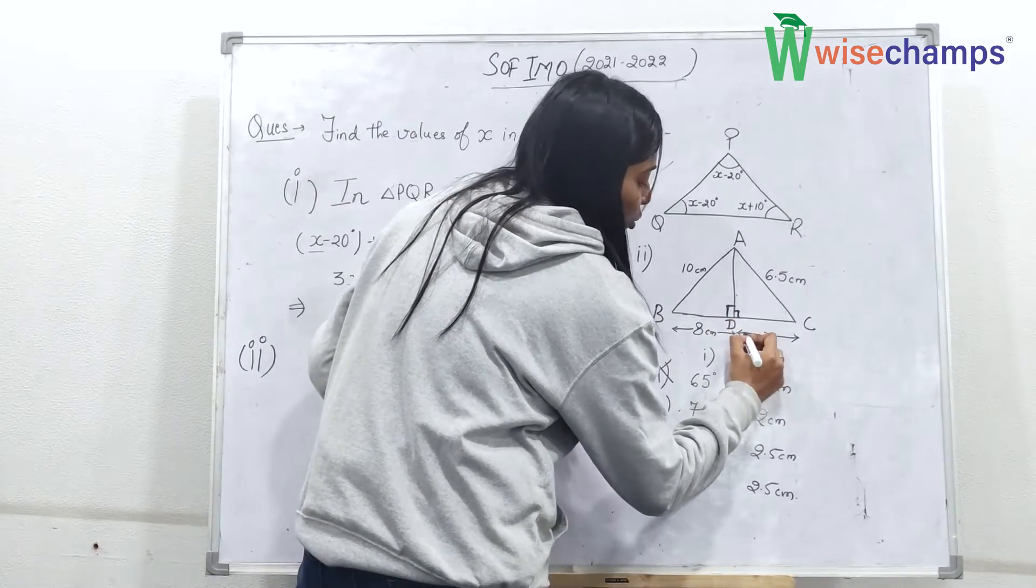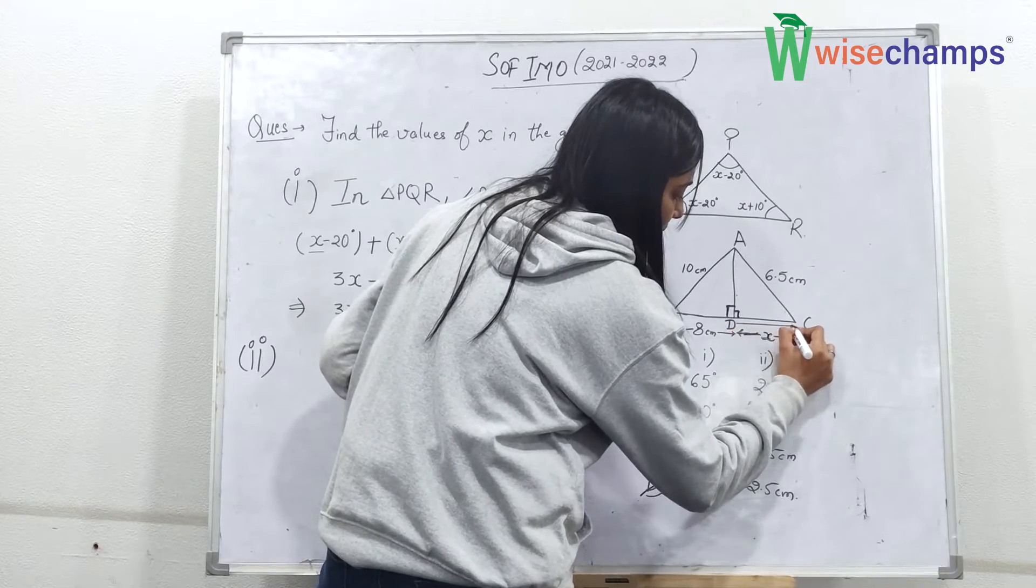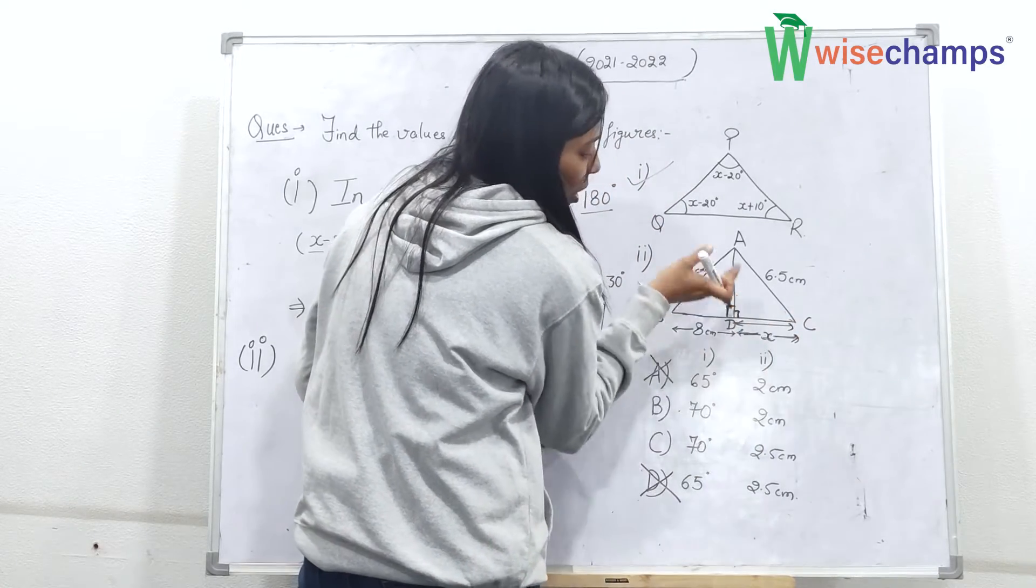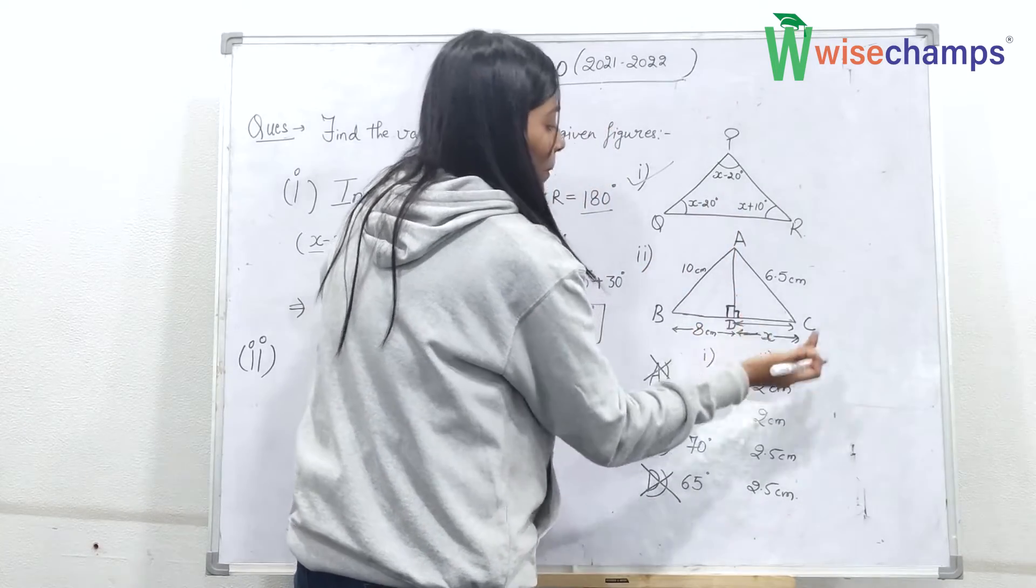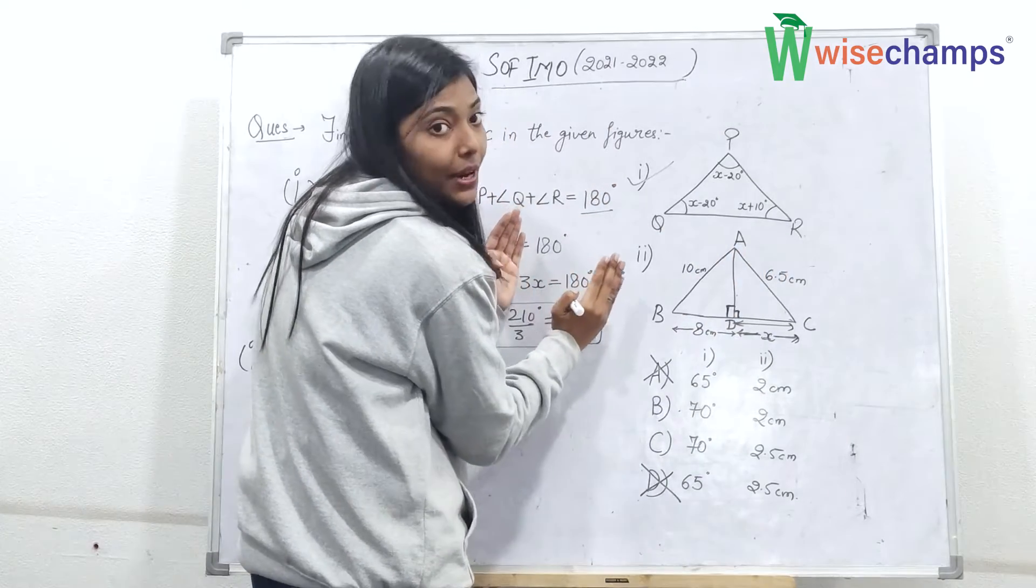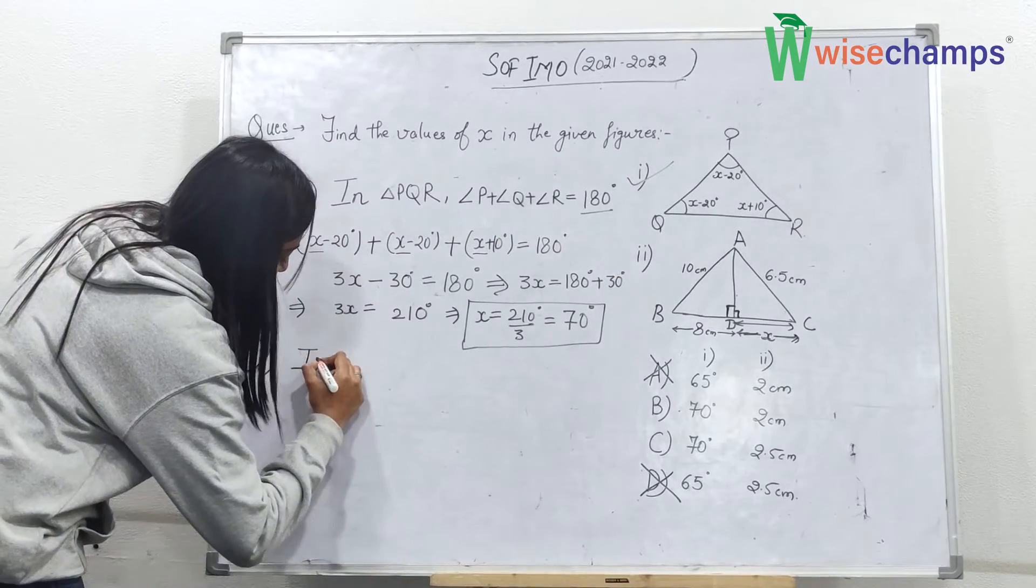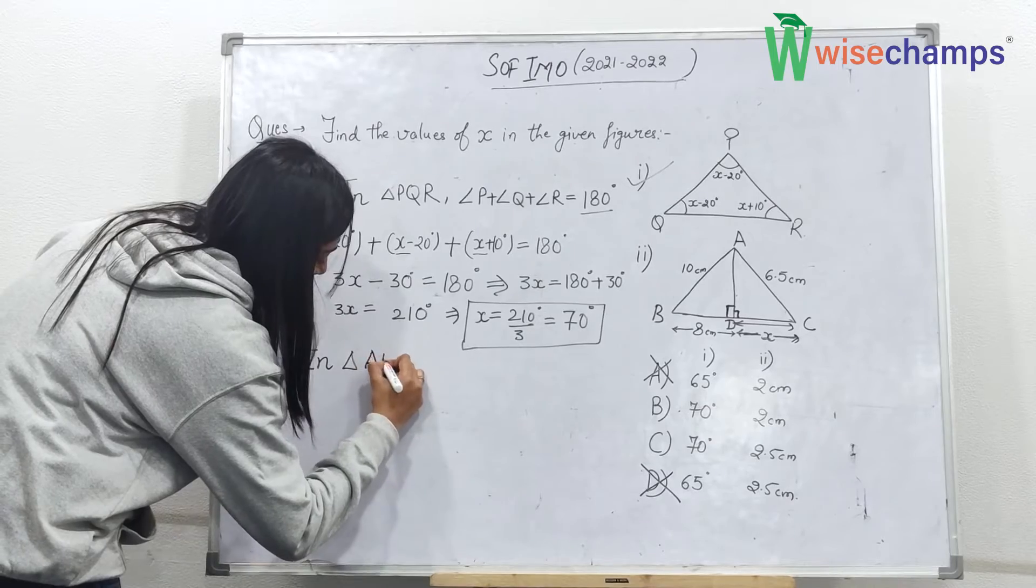One by one in triangle ABD and in triangle ADC. Why? Because to find this value of X, here is CD basically. X is CD here. So you need to know the value of this perpendicular side. So before that you need to find this value also, using that triangle. So first of all we will apply Pythagoras in triangle ABD.